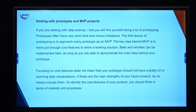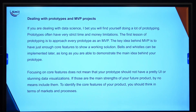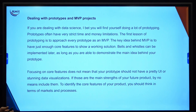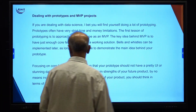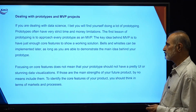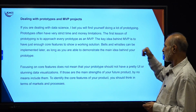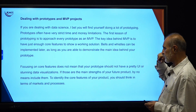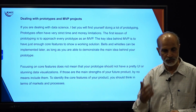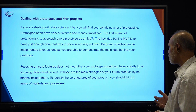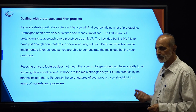We are dealing with prototypes and MVP — minimum viable product. In data science, we find ourselves doing a lot of prototyping. Prototypes often have very strict time and money limitations. The approach every prototype uses is the MVP — minimum viable product. The key idea behind MVP is to just have enough core features to show a working solution. Bells and whistles can be implemented later, as long as we are able to demonstrate the main idea behind our prototype.